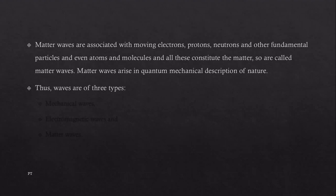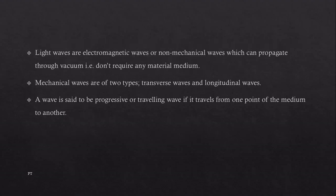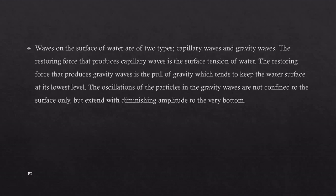Thus waves are of three different types: mechanical waves, electromagnetic waves, and matter waves. Electromagnetic waves like light waves are non-mechanical waves which can propagate through vacuum, or don't require any material medium. On the other hand, mechanical waves are of two types: transverse waves and longitudinal waves. A wave is said to be progressive or traveling wave if it travels from one point of the medium to another.